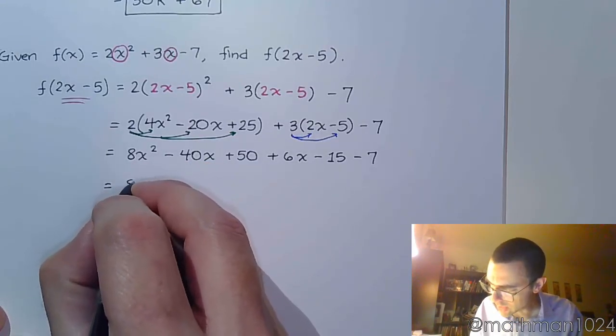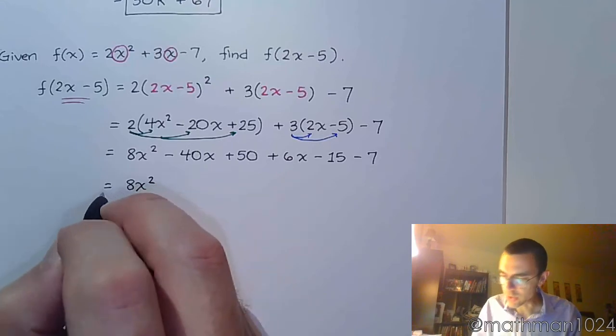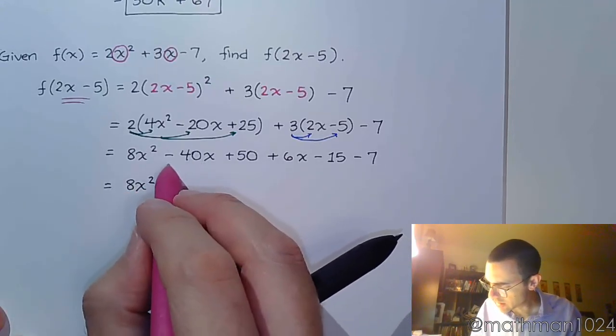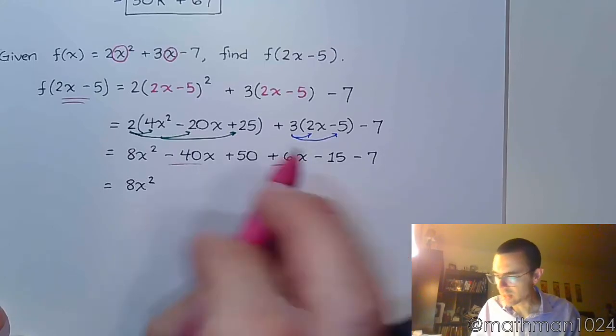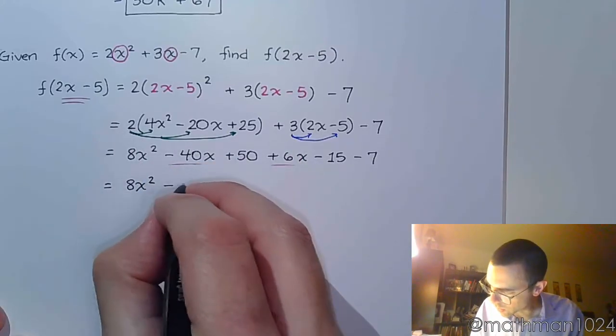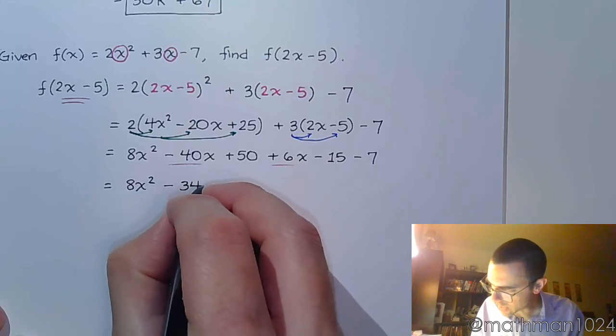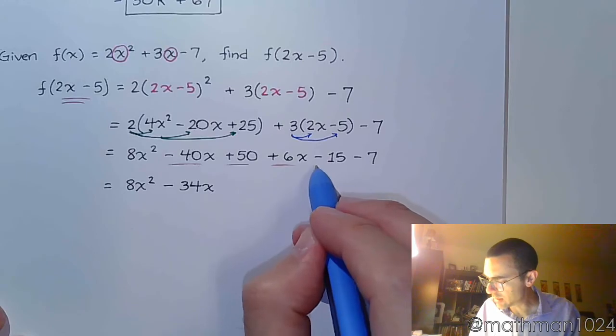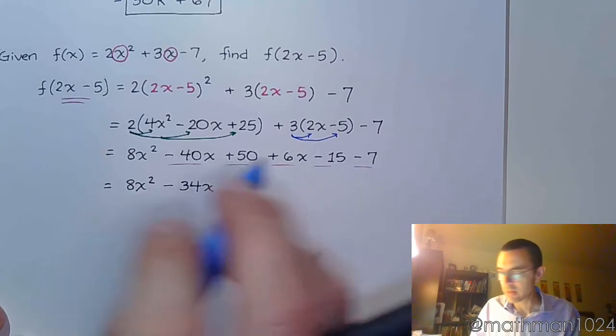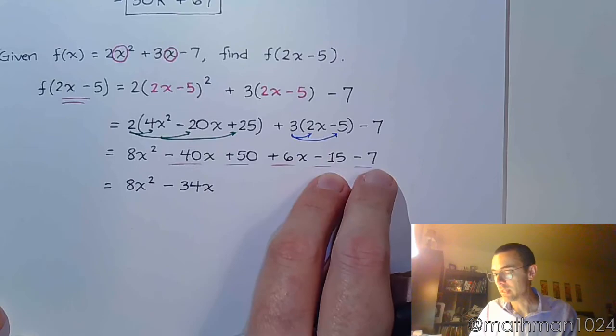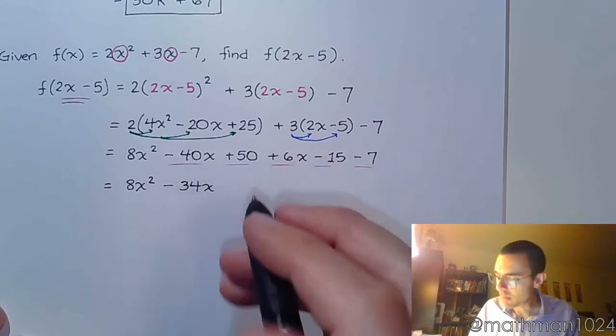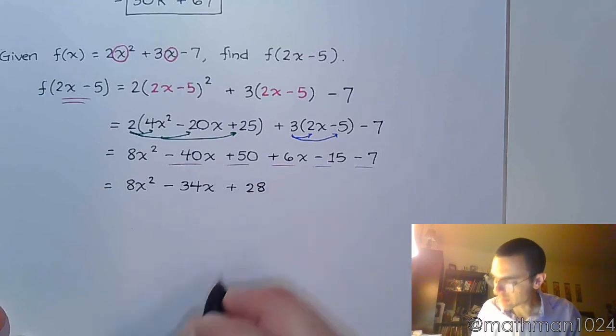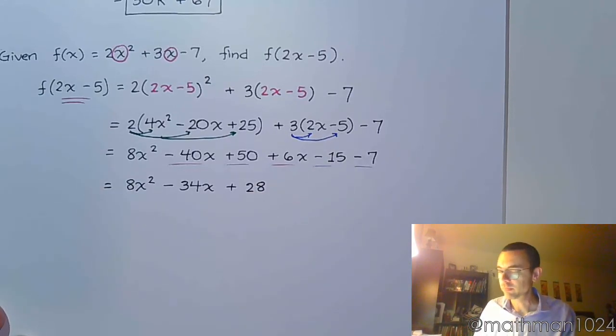So this is my only x squared term, so 8x squared. I have minus 40x plus 6x, and that's it. So that's going to give me negative 34x, and then I have plus 50 minus 15 minus 7. So these guys give me negative 22. So 50 minus 22 is plus 28. And that's it.